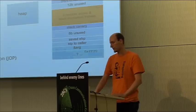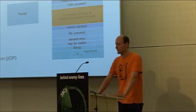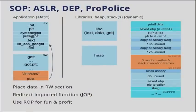We override the puts slot in the GOT to point to the lift-ESP gadget. When the application then executes puts, it gets redirected to the lift-ESP gadget, which in turn pops a specific amount of bytes from the stack, ending up in our controlled buffer. We can then execute our specially placed stack invocation frames using return-oriented programming.